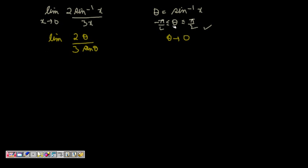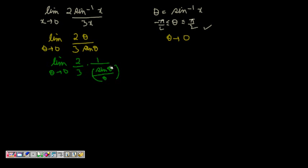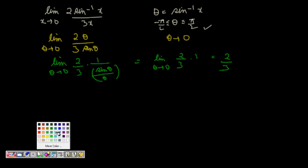This becomes limit as theta tends to zero of (2/3)·(1/(sinθ/θ)). We already know that the limit of sinθ/θ as theta tends to zero is 1, so this limit equals (2/3)·1 = 2/3. So the answer for this limit is 2/3.